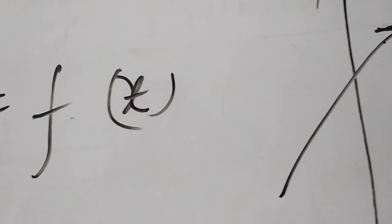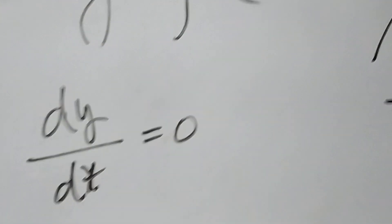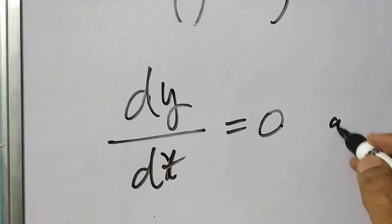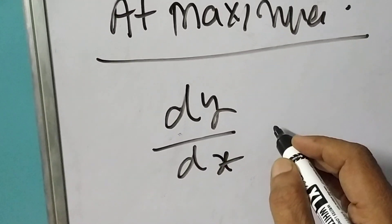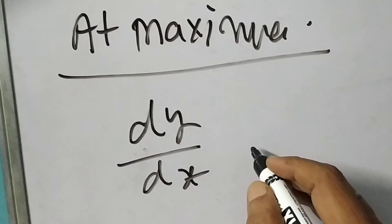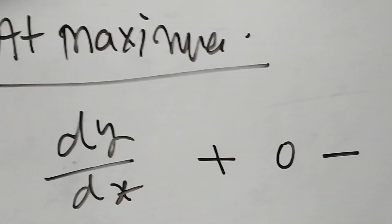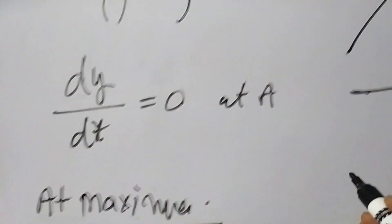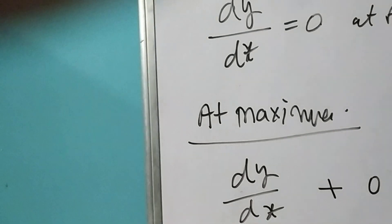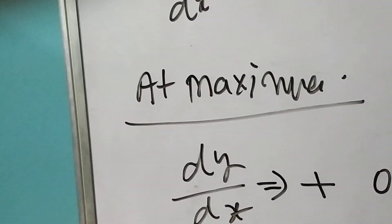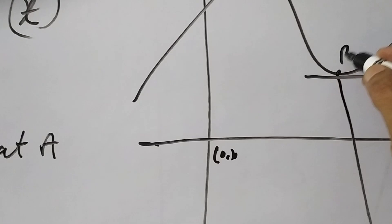At maxima, dy by dx is decreasing here and increasing up to this point then decreasing. So dy by dx is zero at point A. It is changing in increasing order — from positive to zero then to negative terms. dy by dx here is positive, positive, positive, here zero, and then going towards negative. So dy by dx changes from positive to zero to negative. Suppose this point is V, that is the minima point.